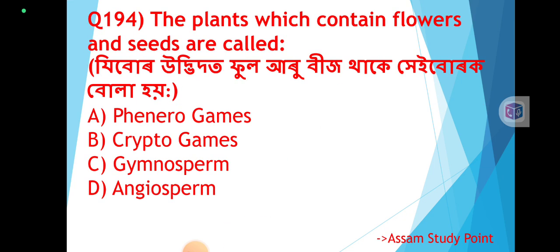Question 194: The plants which contain flowers and seeds are called — zibur urbitot phularu bistar heburak bulah hoy. The correct answer is Option D: Angiosperms. Zibur urbitot phularu bistar heburak Angiosperms bulikuah hoy — plants with flowers and seeds are called Angiosperms.